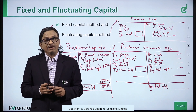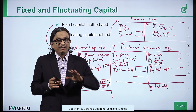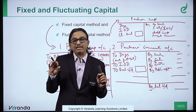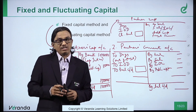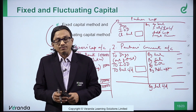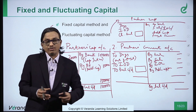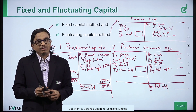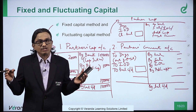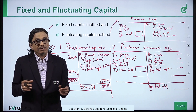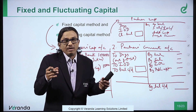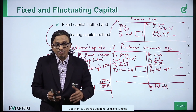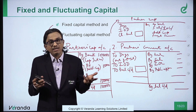Fluctuating method may be easier since only one account needs to be prepared, but it is not in the best interest of the business or the partners. It is advisable to follow fixed capital method where capital is recorded separately and all other things are recorded separately — clarity about how much money can be withdrawn is available. In examinations, do what the question asks: if it asks for capital and current account, follow fixed capital method; if it asks for fluctuating, prepare only one capital account.